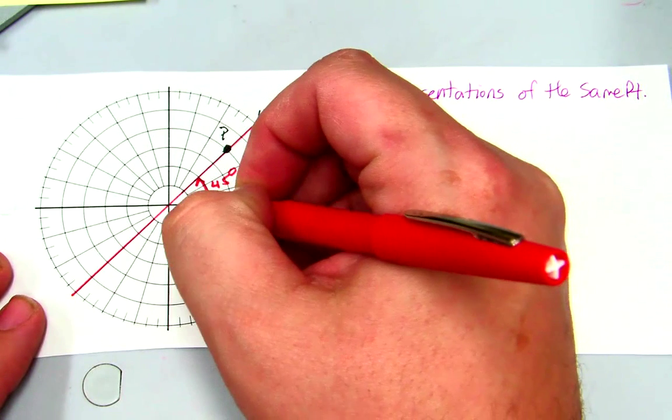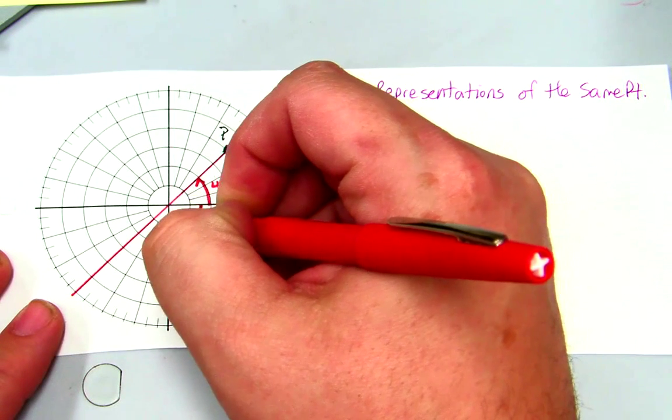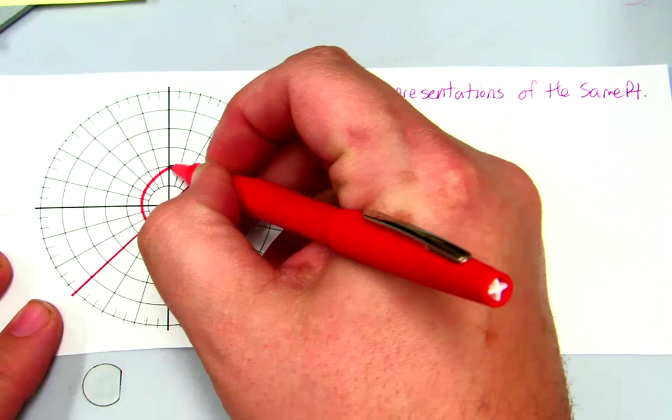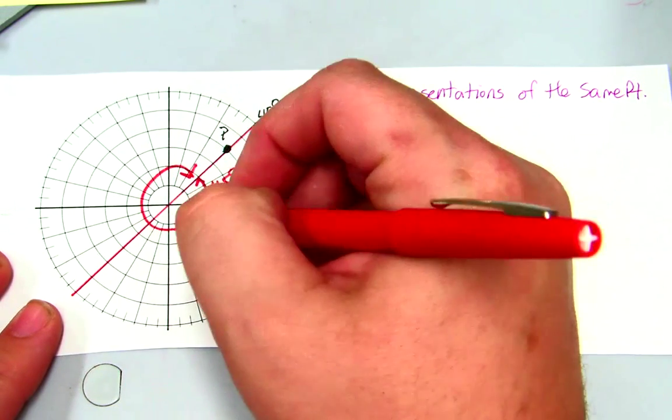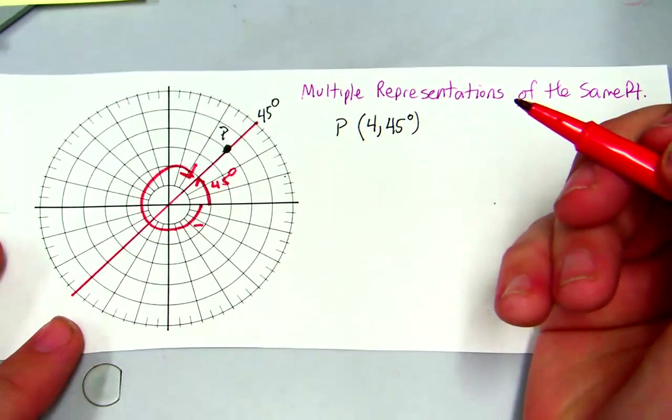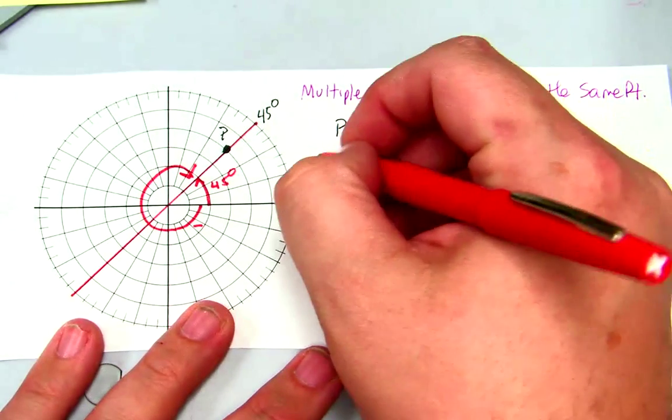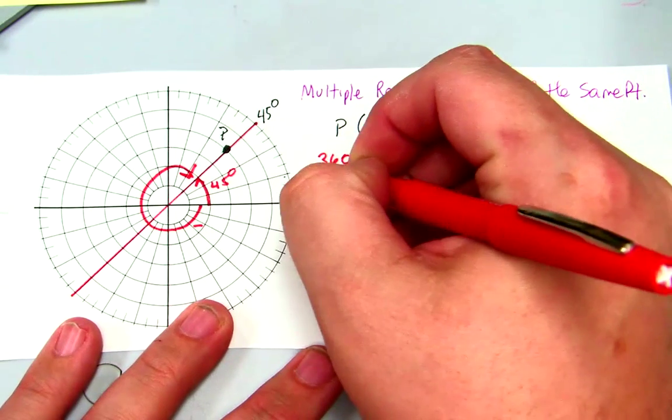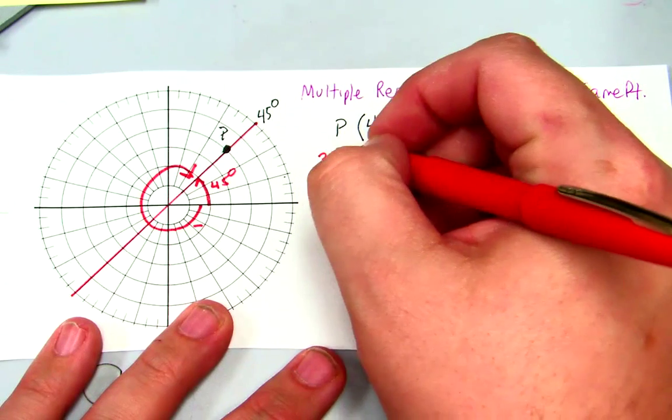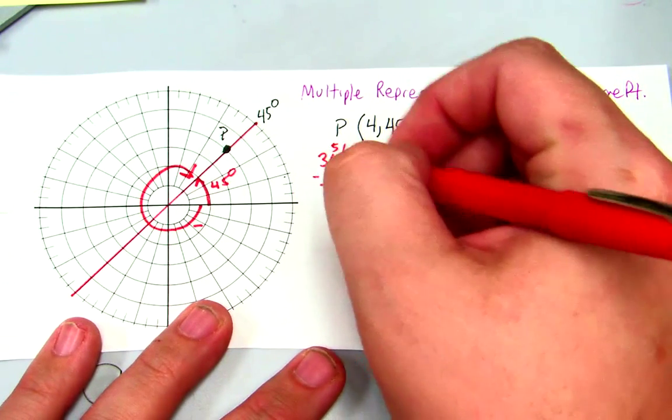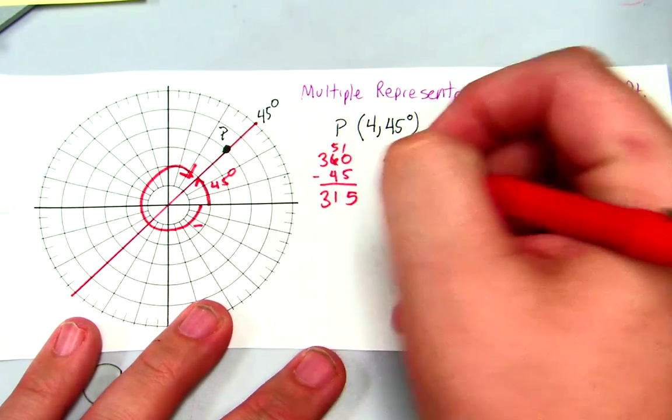Now what I want to find is what this angle is. It's going to be negative, but together they should equal 360 degrees. So I can take 360 degrees minus 45. There's a 5, there's a 1, there's a 3.